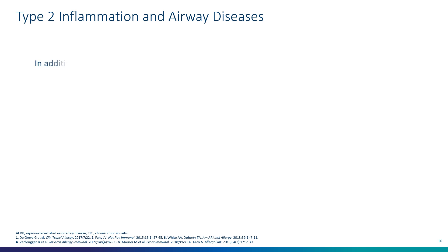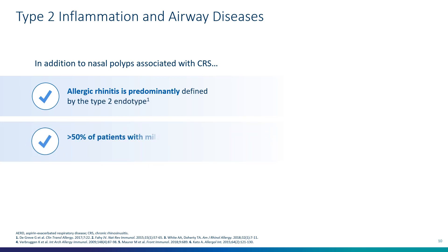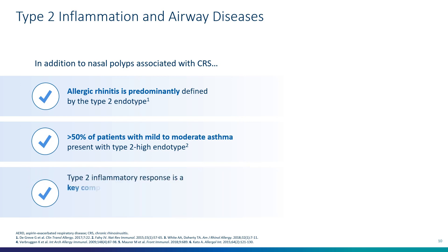Type 2 inflammation and airways disease run hand in hand. In addition to nasal polyps associated with chronic rhinosinusitis, allergic rhinitis is predominantly defined by a type 2 endotype. Greater than 50% of patients with mild to moderate asthma present with a type 2 high endotype. And the type 2 inflammatory response is a key component of aspirin exacerbated respiratory disease, AERD, particularly in association with asthma and nasal polyps.